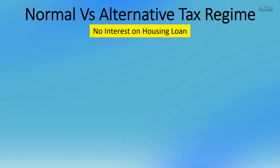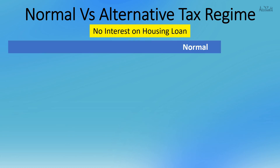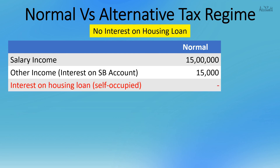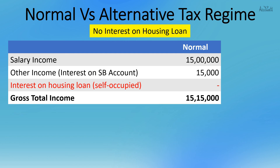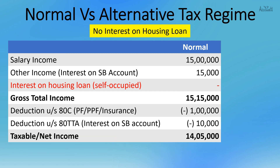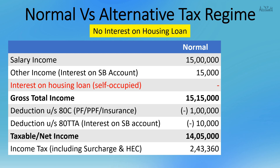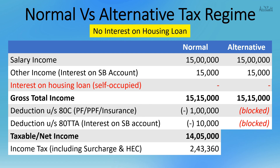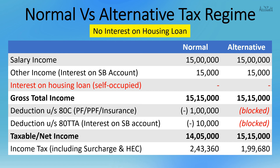Now let us take another situation where there is no interest on housing loan. Under the normal tax regime with salary of 15,00,000 and other income of 15,000, the gross total income is 15,15,000. After deductions of 1,00,000 under 80C and 10,000 under 80TTA, taxable income is 14,05,000, and income tax is 2,43,360. Under the alternative tax regime, deductions are blocked so taxable income remains 15,15,000, and tax payable is 1,99,680 — making the alternative tax regime the better option here.